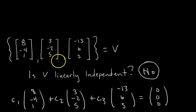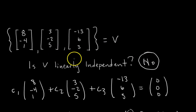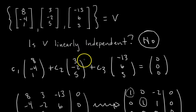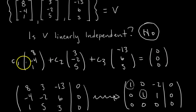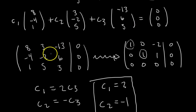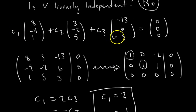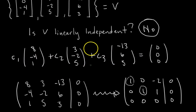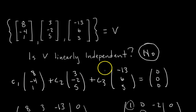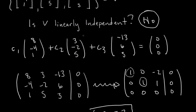The same process applies to any set — say, five vectors in R5. You write a general linear dependence relation, represent the vector equation as an augmented matrix, row reduce it, and check for free variables. If you have free variables, you'll have non-zero scalars in the linear dependence relation, which means you can write one vector as a linear combination of the others — meaning the set is linearly dependent.